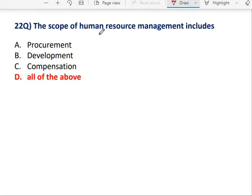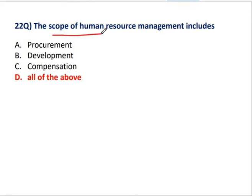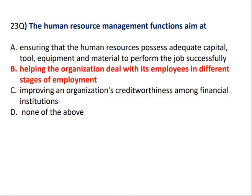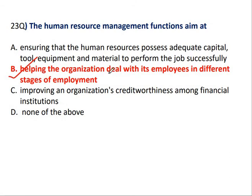Question No. 22: The scope of Human Resource Management includes — scope बहुत ही broad है, HR से related, people से related — so Procurement, Development, Compensation, All of the above is the correct answer. Question No. 23: The Human Resource Management function aims at helping the organization deal with its employees in their different stages of employment — that is the main aim of the Human Resource function.